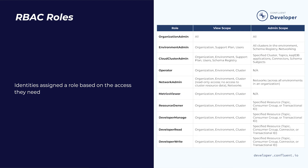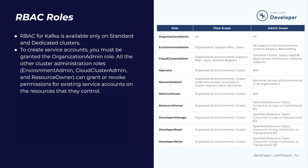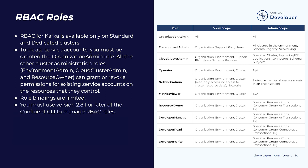Confluent Cloud has the following roles pre-configured. I recommend that you keep a copy of this table to reference as you begin to plan your access architecture, and also reference the documentation for more in-depth details on each role. There are a couple things to keep in mind as you use RBAC in Confluent Cloud: RBAC for Kafka is available only on standard and dedicated clusters. To create service accounts, you must be granted the organization admin role. All other cluster administration roles — environment admin, cloud cluster admin, and resource owner — can grant or revoke permissions for existing service accounts on the resources they control. Role bindings are limited like every other resource on Confluent Cloud, so check the official documentation for current guidance. You must use version 2.8.1 or later of the Confluent CLI to manage RBAC roles.